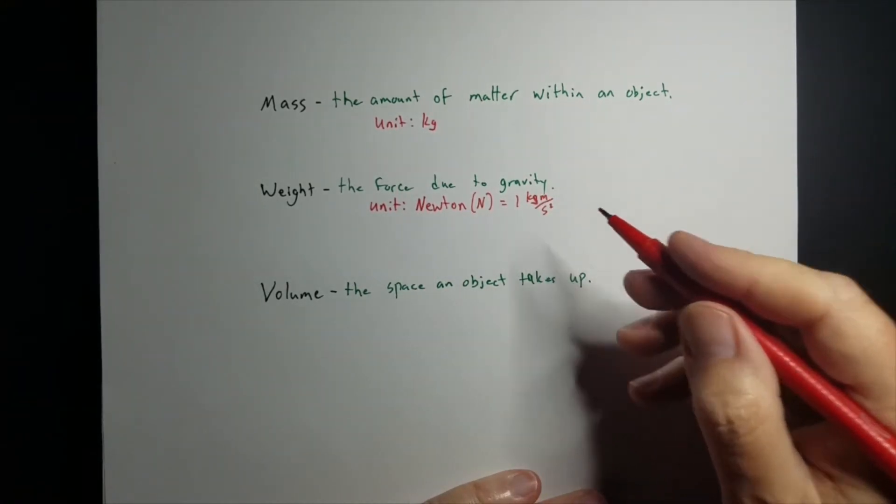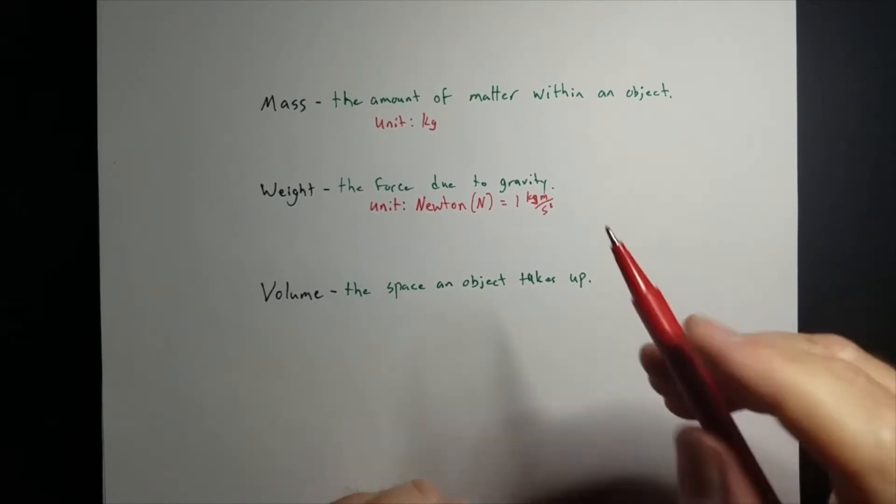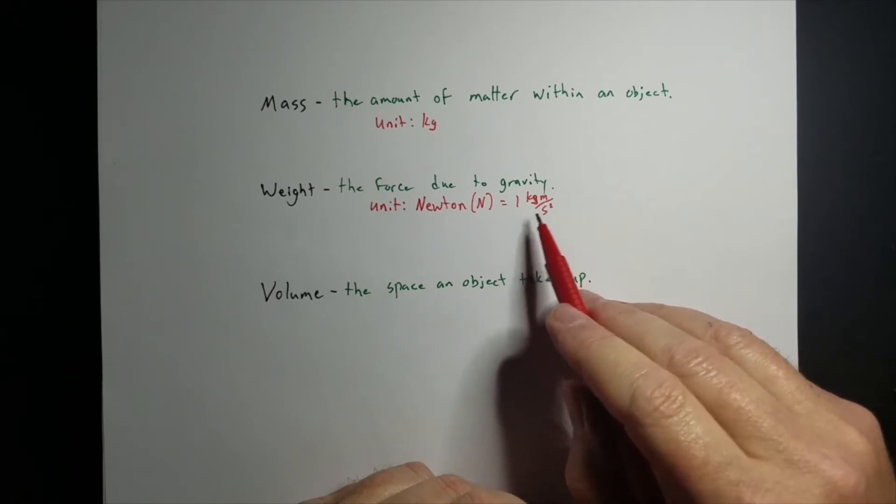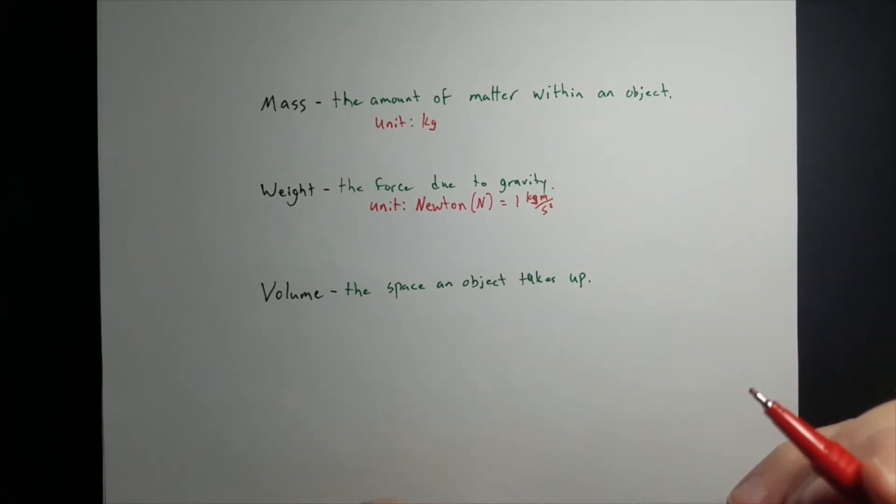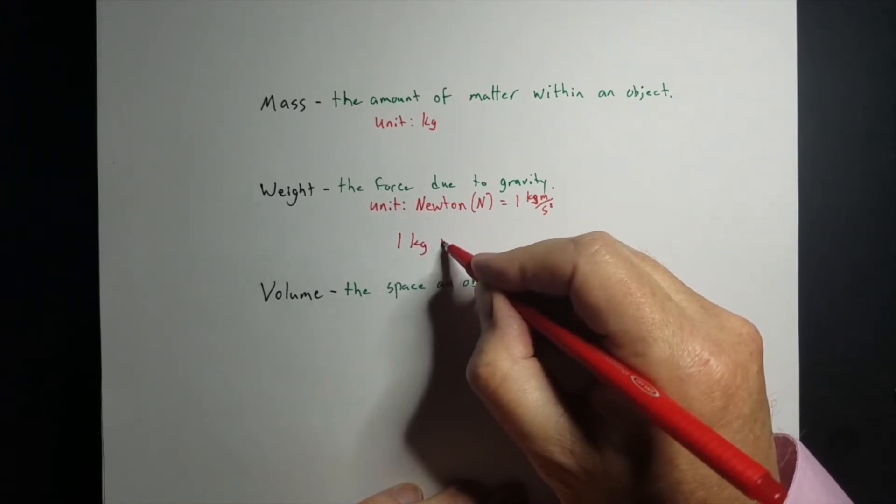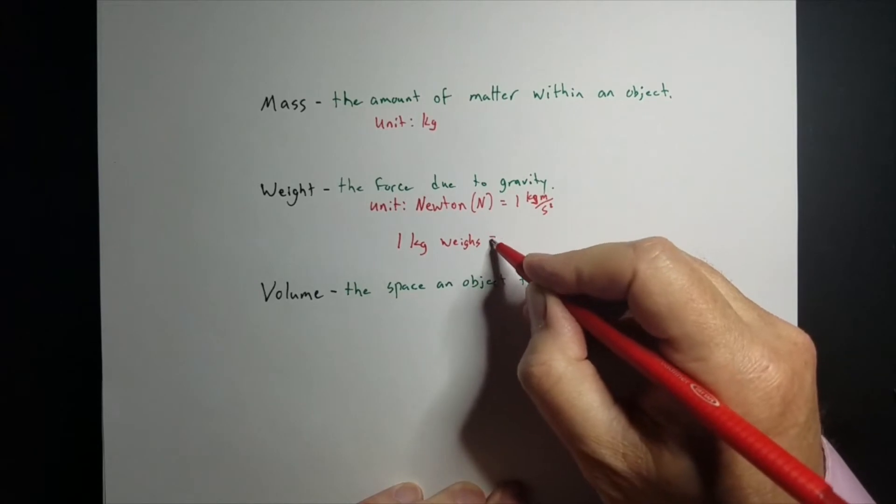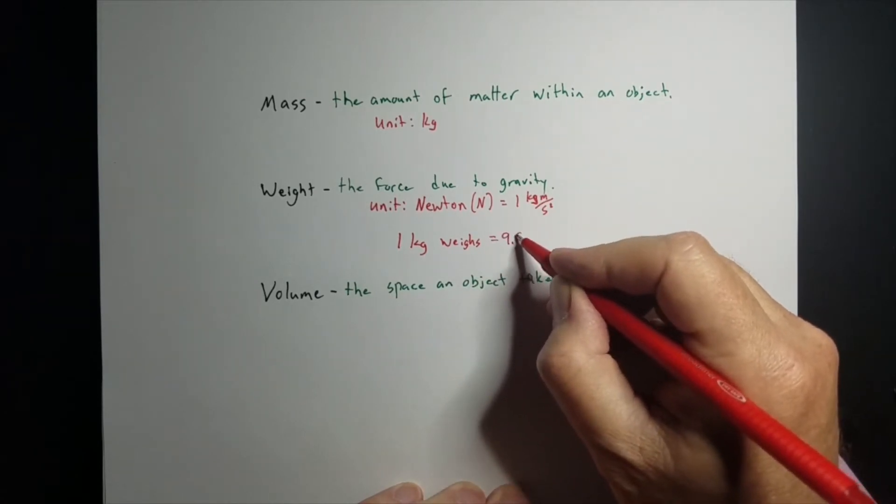Well, we got kind of tired of writing kilogram meter per second squared, so we came up with a new unit called a Newton. So we came up with an abbreviation for an abbreviation. We were just kind of lazy like that. But one kilogram weighs 9.8 Newtons.